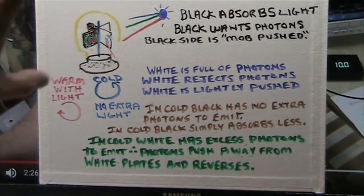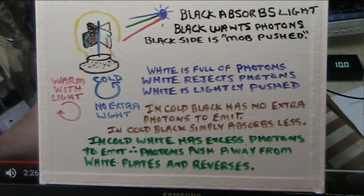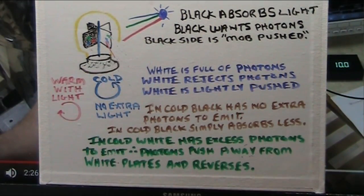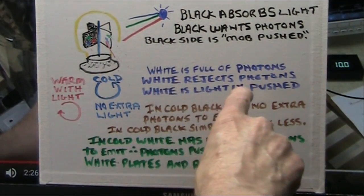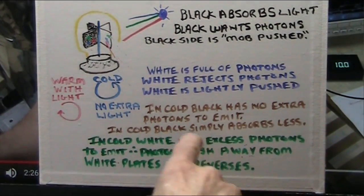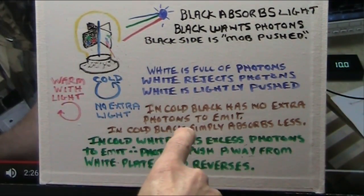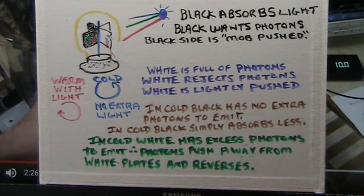Now, you saw when he sprayed cold on there. So, cold, with no extra light, spreads backwards. Well, why does that happen? Well, white is already full of photons. So, that can't emit any. It doesn't want any. And, it won't emit any. It just bounces them away. Stay away from me. So, the white rejects photons. The white is lightly pushed. Okay. In the cold, though, the black has no extra photons to emit. So, in the cold, the black simply absorbs less. So, the cold pushes. The black absorbs less. So, the cold, I mean, the white pushes. The black doesn't.